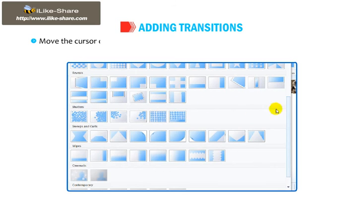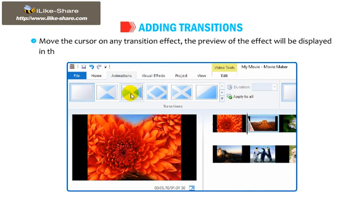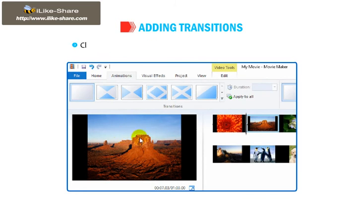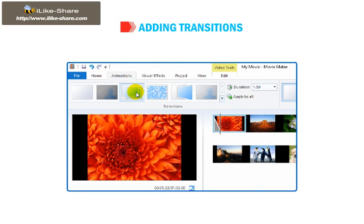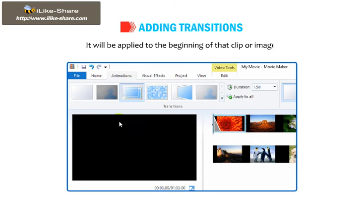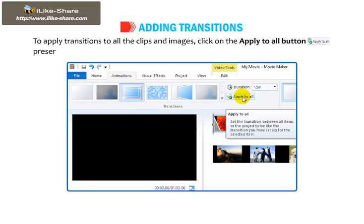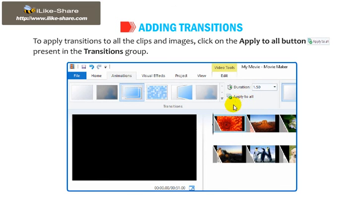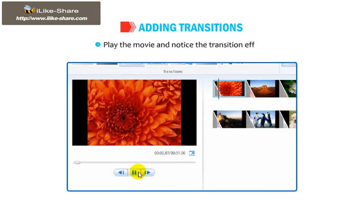Move the cursor on any transition effect and the preview of the effect will be displayed in the Preview pane. Click on a video clip or image and then select any transition. It will be applied to the beginning of that clip or image. To apply transitions to all the clips and images, click on the Apply to All button present in the Transitions group. Play the movie and notice the transition effect.